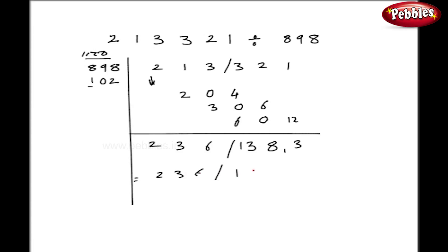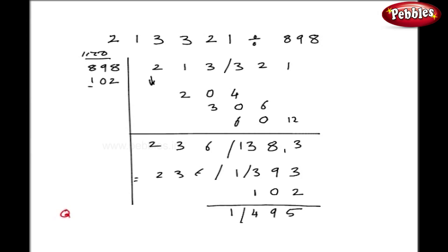My right-hand side is 1393. Let us proceed further. Take this 1 down: 1 into 1 is 1, 0, and 1 into 2 is 2. The addition gives 4, 9, 5. Now 495 is less than 898, so my procedure is over. The quotient is 236 plus 1, so my quotient is 237 and my remainder is 495.